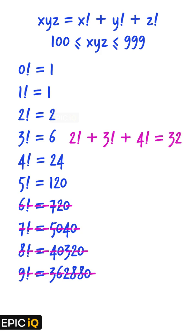But the sum of factorials, the number xyz, is a 3-digit number. To get a 3-digit number as a sum, we must have one of the letters as 5.